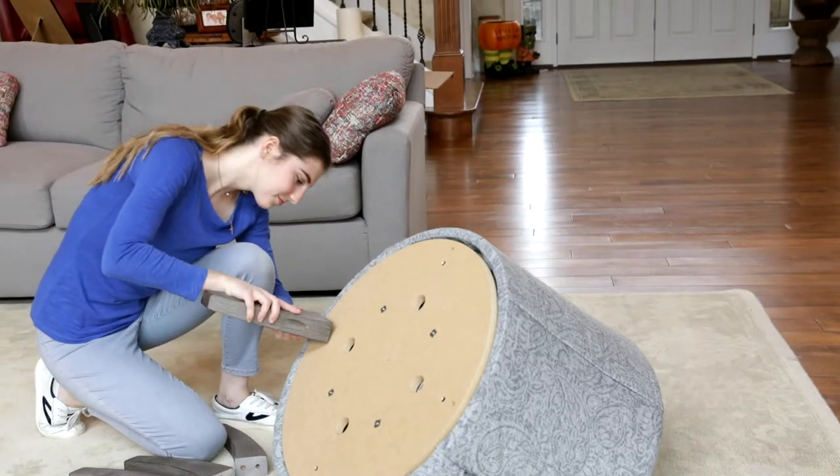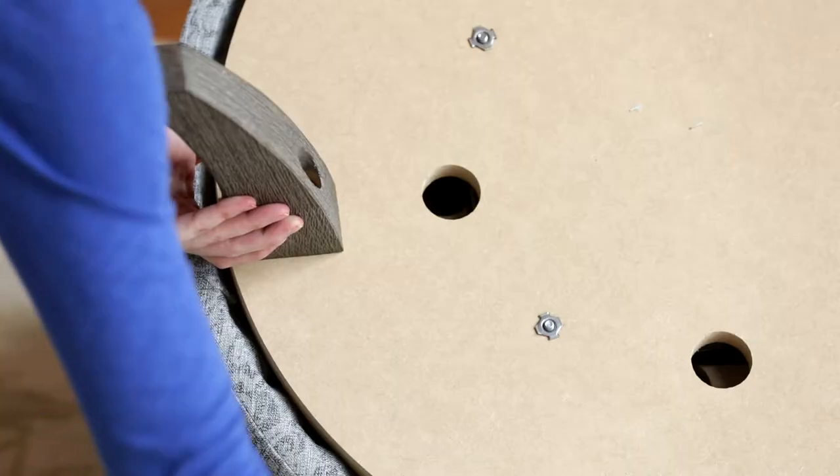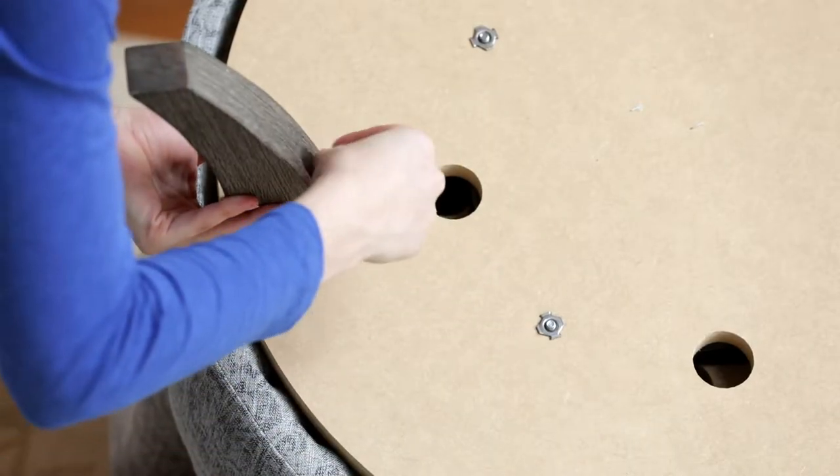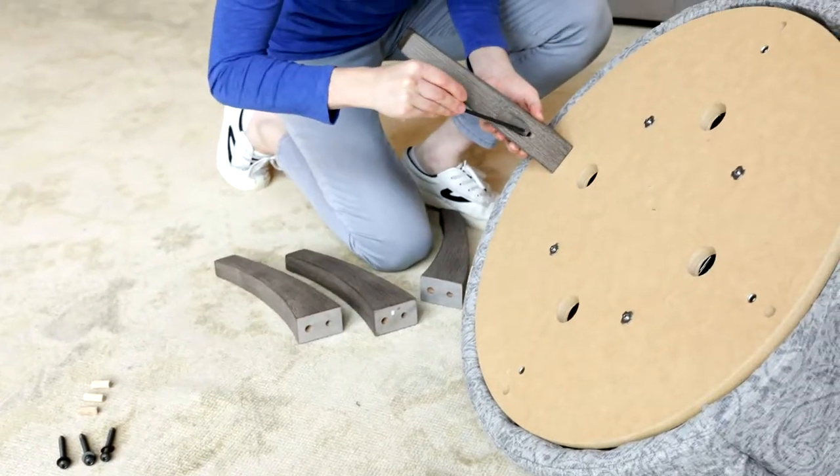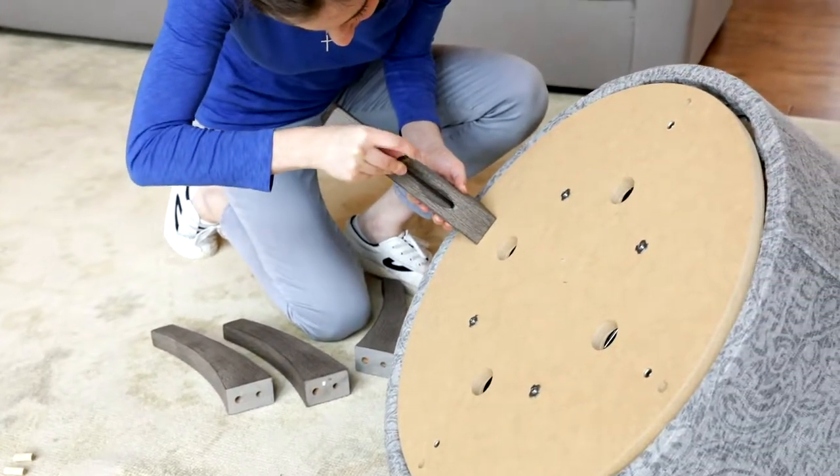Install the leg bolt, align it with the threads in the base, and tighten the bolt down with the enclosed allen wrench. Do not use a drill as this could strip the threads.